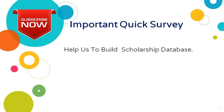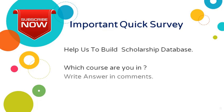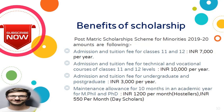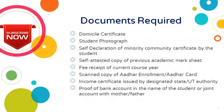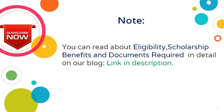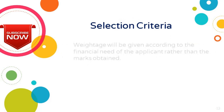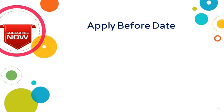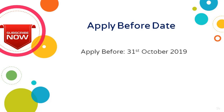Quick survey: Help us build a scholarship database — which course are you in? Write your answer in the comments. Now look at the eligibility criteria, benefits of the scholarship, and documents required — visit our blog to read about them carefully. Selection criteria: weightage will be given according to the financial need of the applicant rather than marks obtained. The last date to apply for the post-metric scholarship is October 31, 2019.